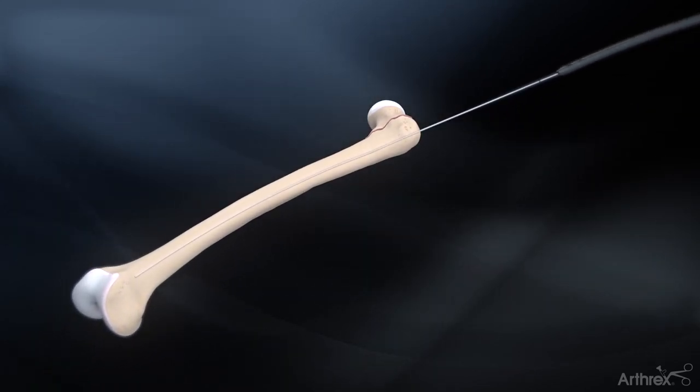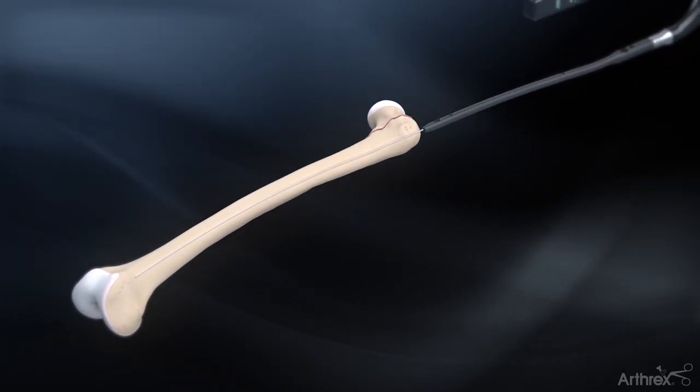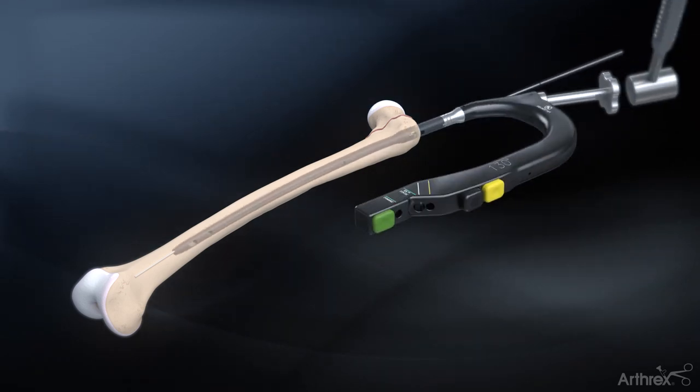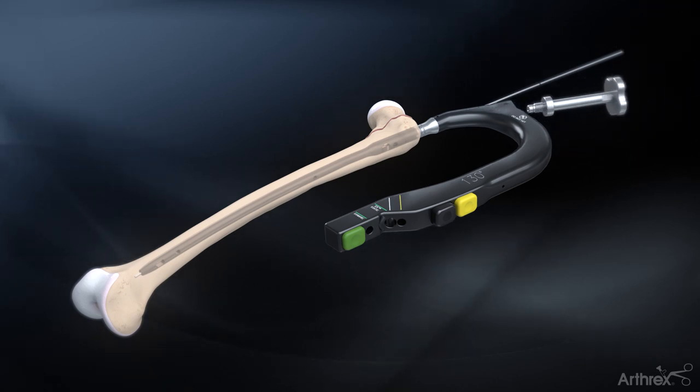Introduce the nail into the proximal femur over the guide wire using the radiolucent targeting arm to control nail rotation. Complete the insertion with gentle mallet strikes on the impactor pad.